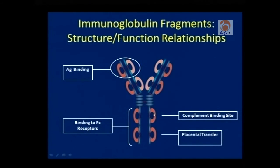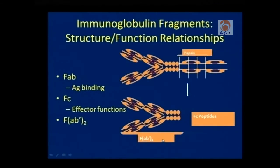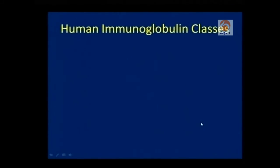This part of the heavy chain binds complement proteins, and in the case of IgG immunoglobulins, this domain is responsible for placental transfer. When we digest an antibody with pepsin, a protease, we get two fragments: one FAB fragment with valency 2 and one FC fragment. The FAB fragment is antigen-binding and the FC fragment carries effector functions.